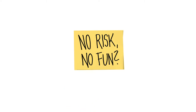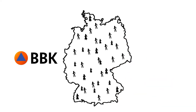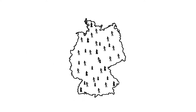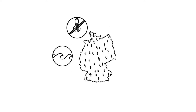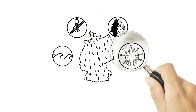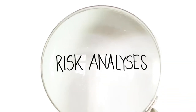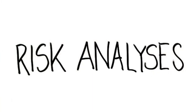The aim of the Federal Office of Civil Protection and Disaster Assistance is to identify risks and protect the population. Being well prepared is essential to achieve this. To manage risks efficiently, we need to know them. This is why risk analyses are the cornerstone of comprehensive risk and crisis management.